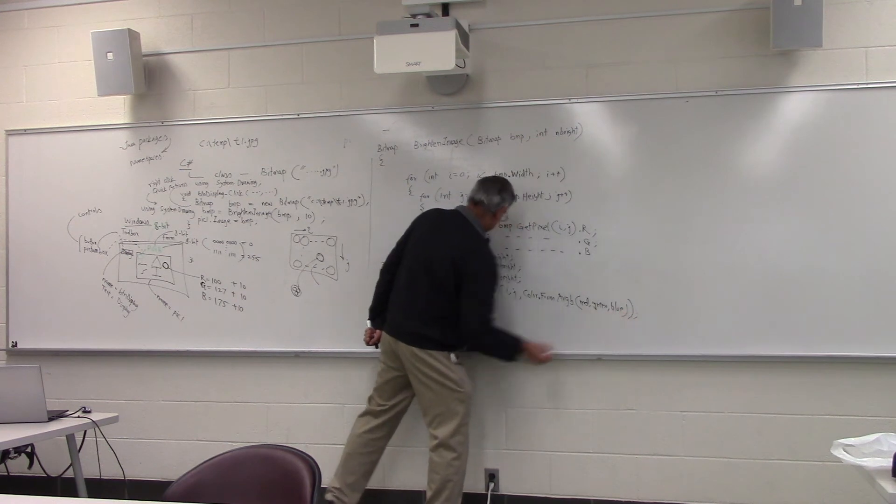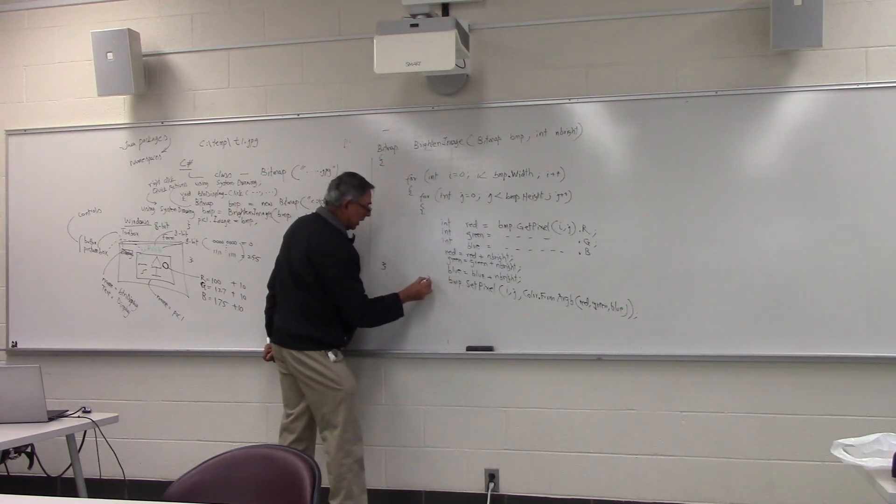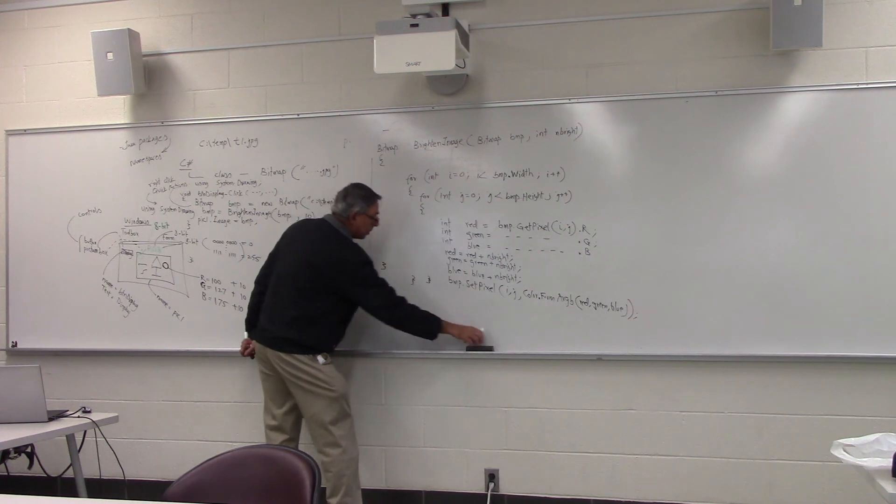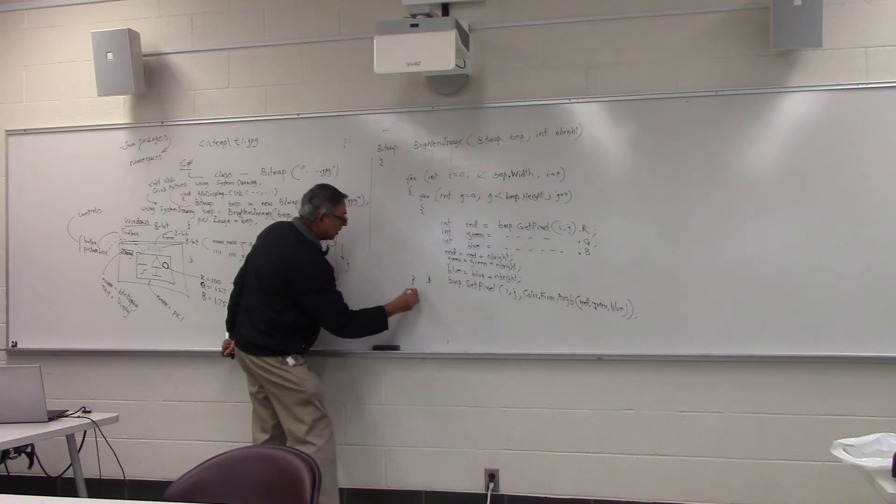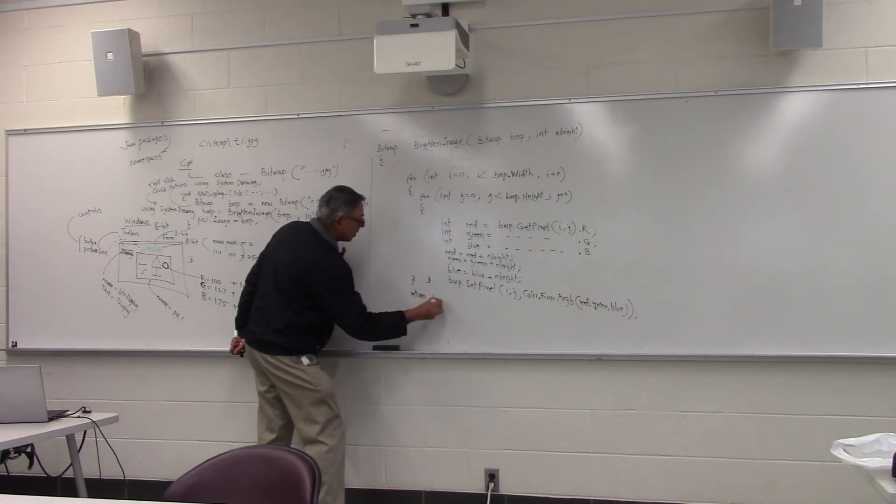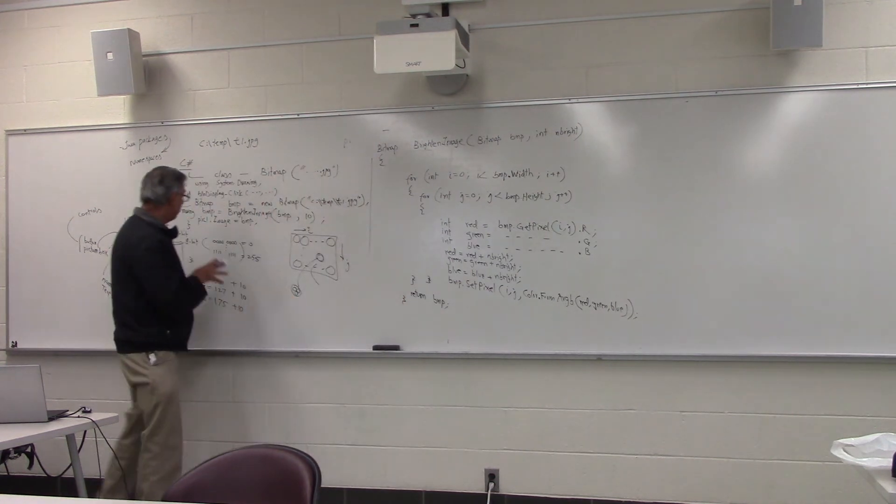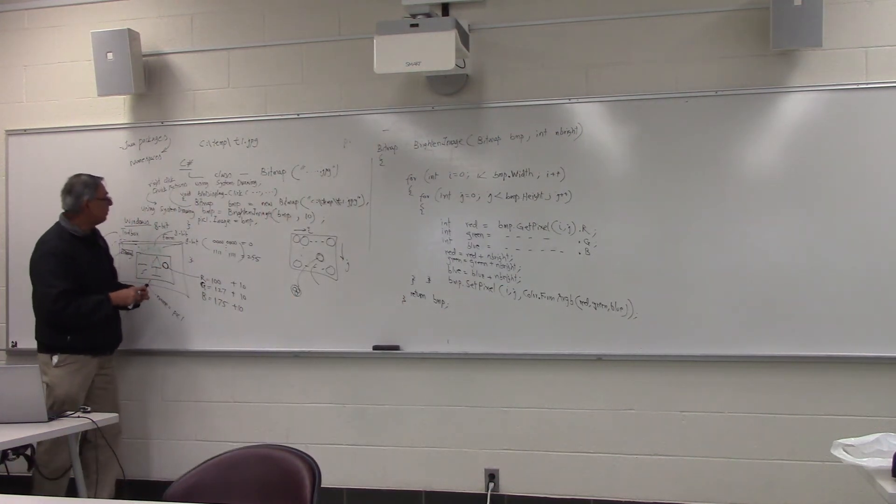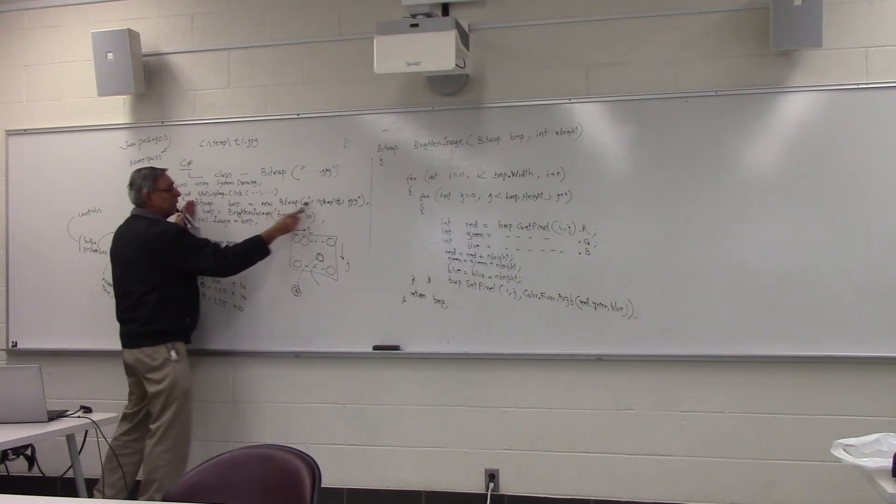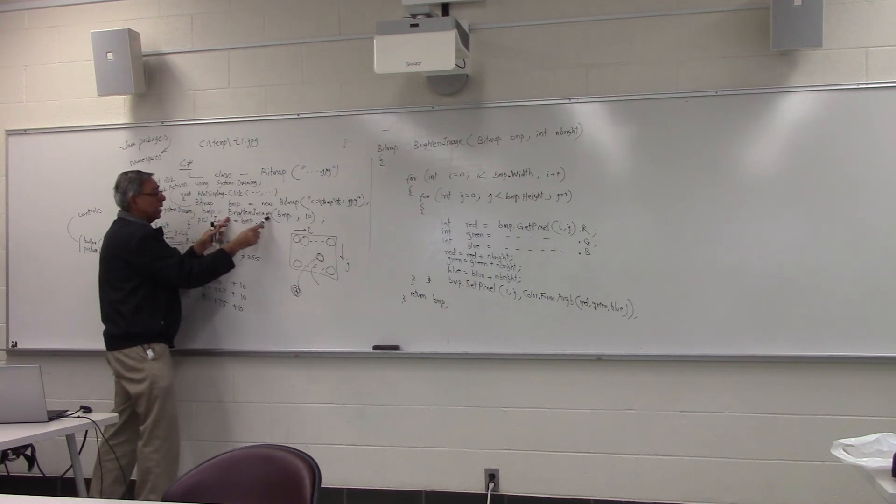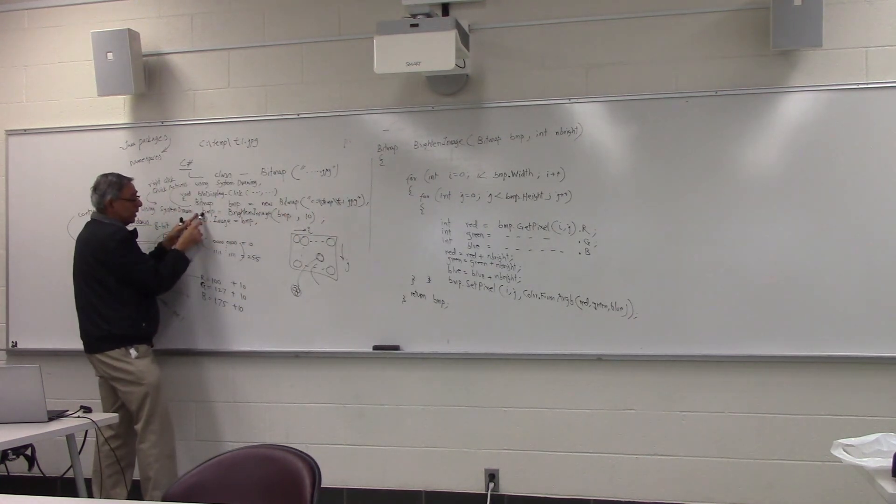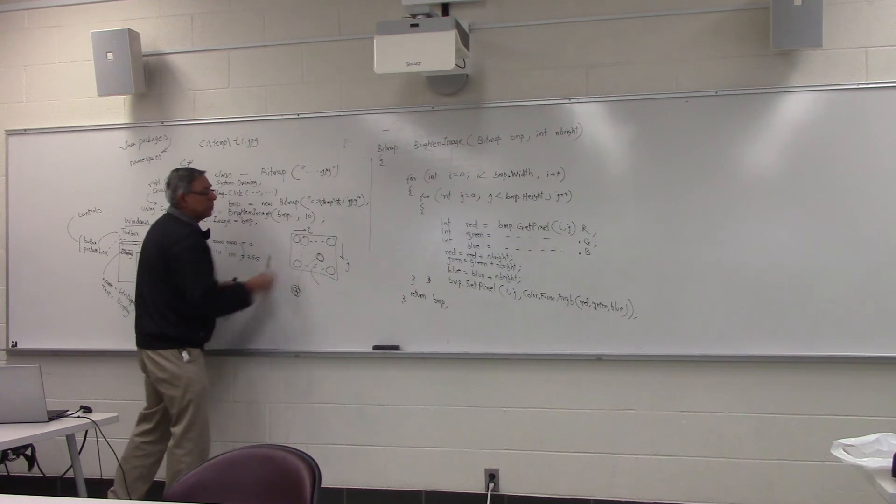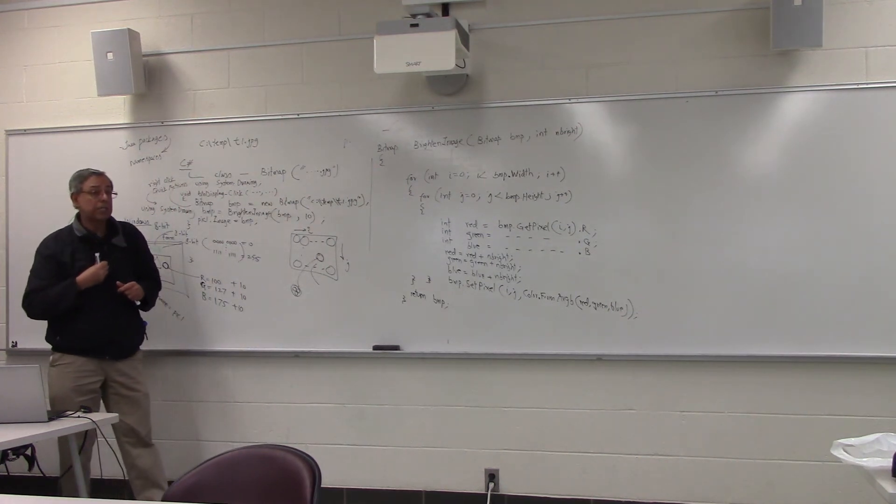And that's it. And at the end, once we go through the entire 2D array of our bitmap, then all we have to do is just say return bmp. Now whoever was calling it. For example, if we read this bitmap bmp t1.jpeg, so we decompressed it, then we passed it to this. This will operate on the bitmap, give us the modified bitmap, and then we display. Now this picture will be the brightened version of the same image.